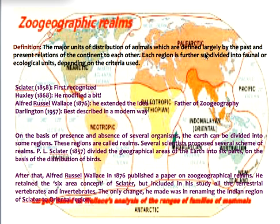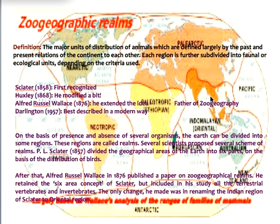Geographical realms are the major units of distribution of animals, defined largely by the past and present relations of the continents to each other. Each region is further subdivided into faunal or ecological units. Sclater was the first scientist to recognize geographical realms in 1858. Ten years later, Huxley modified Sclater's concept, and then Alfred Russell Wallace in 1876 extended Sclater's idea. Wallace is called the father of zoogeography. Darlington best described the zoogeographic realms in the modern way.